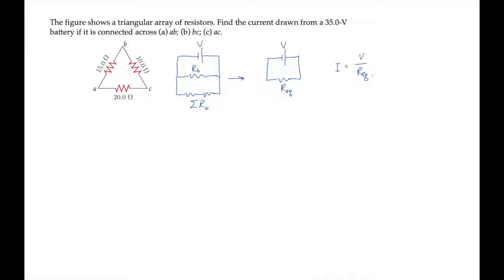We can express the equivalent resistance using the inverse rule for resistors in parallel. That gives us 1 over the equivalent resistance equals 1 over the resistance across the battery plus 1 over the sum of the other resistances.